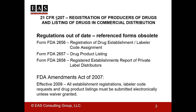Let's start with a little history and background. The requirements for establishment registration and drug listing can be found in Section 510 of the Federal Food, Drug, and Cosmetic Act, and they're codified in 21 CFR Part 207. Although the information in the CFRs is a little bit out of date, as it refers to previously used paper forms.